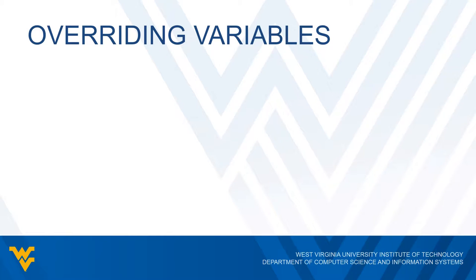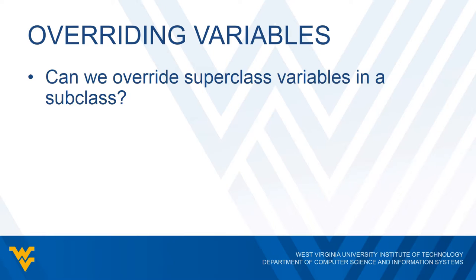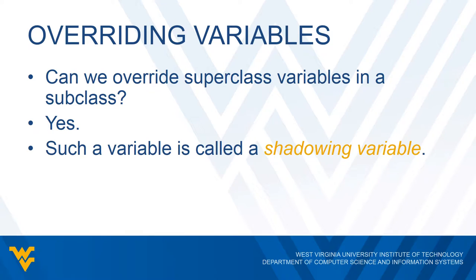A question you might be asking is: can we override superclass variables in a subclass? We can override superclass methods in a subclass, so could we just declare our own length and width variables in our box subclass? The answer is yes, we can do this. Any variable where we're overriding a superclass variable is called a shadowing variable. With that said, we should avoid doing this — we should avoid shadowing variables.